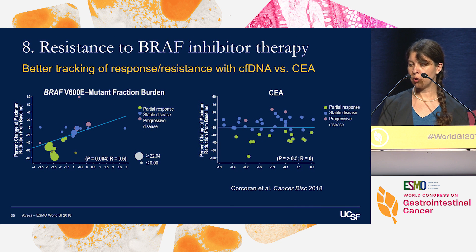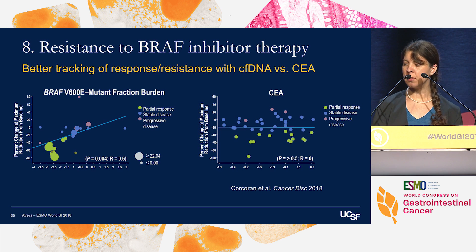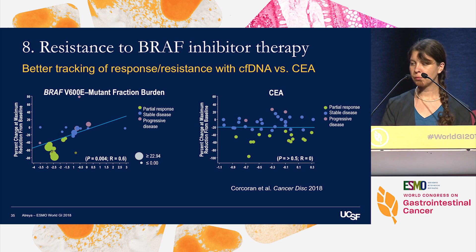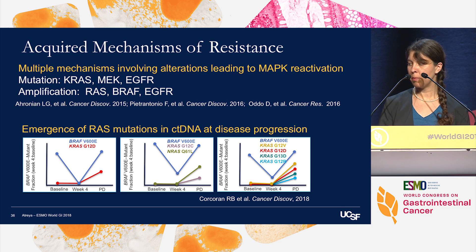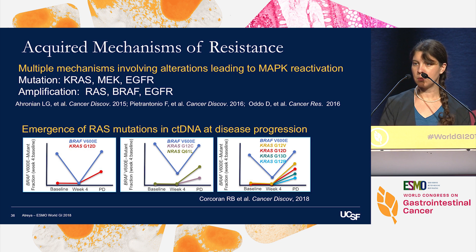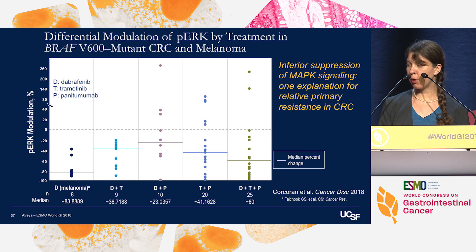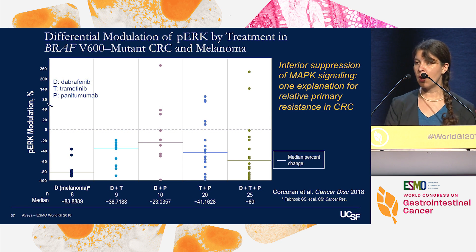Regarding resistance biomarkers, we found that BRAF V600E mutant allele fraction in cell-free DNA correlated better with radiographic response than did change in CEA. Mechanisms of acquired resistance to BRAF inhibitor-containing combinations seem to all converge on ways to reactivate MAP kinase signaling. Remarkably, we saw emergence of up to four KRAS mutations in the blood of patients on the MEK116833 study at the time of disease progression. Mechanisms of primary resistance may also involve inferior suppression of MAP kinase signaling.